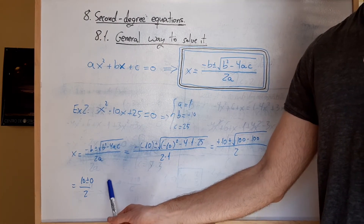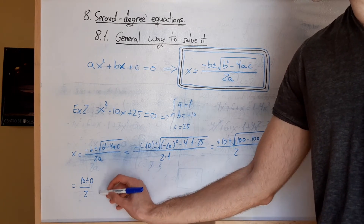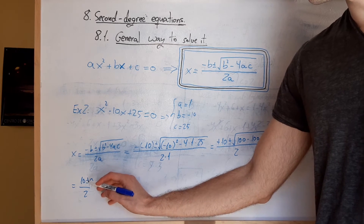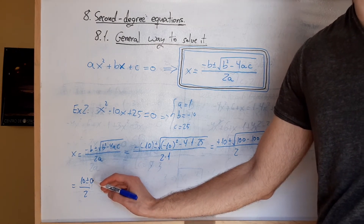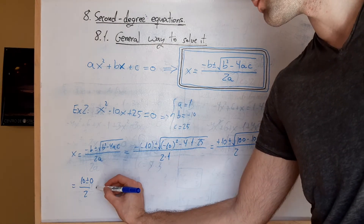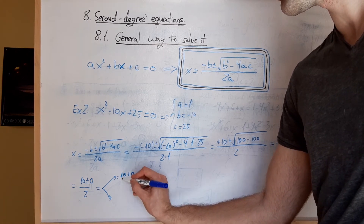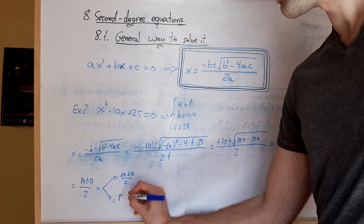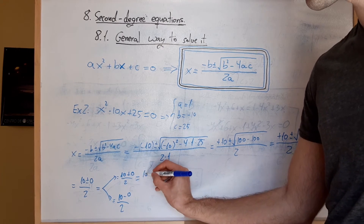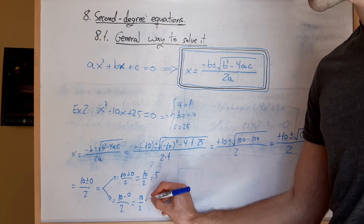Entonces, en este punto, antes en el ejemplo anterior lo que hacíamos era dividir el problema en 2, de tal forma que en un caso lo hacíamos con el signo positivo y en otro con el signo negativo. Pero pasa que en este caso da igual que lo dividamos en 2 o que no, porque como estamos sumando o restando 0, que no cambia las cosas, el resultado final tiene que salirnos el mismo. Hacemos como siempre: dividimos el problema en 2. Tenemos 10 más 0, que son 10, partido por 2; y abajo 10 menos 0, que son 10, partido por 2. En los dos casos llegamos al mismo resultado que es 5.